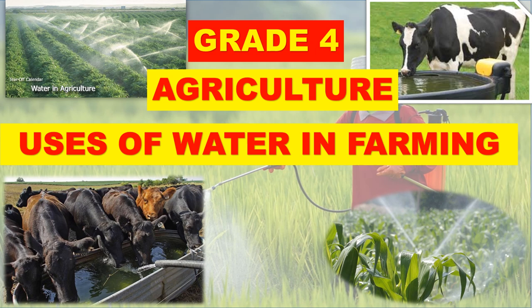The uses of water in farming are: one, growing flowers, fruits, and vegetables; two, irrigation of crops; three, cooling compost manure; four, mixing water with fertilizers; five, fish farming; and six, watering animals.